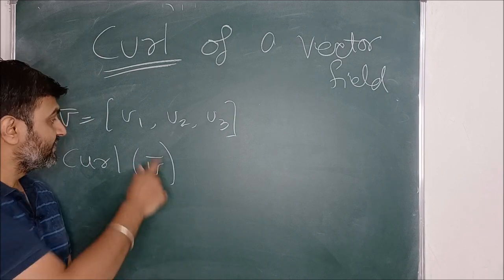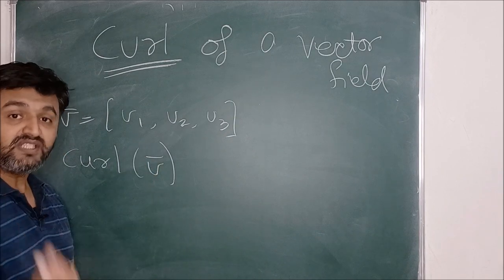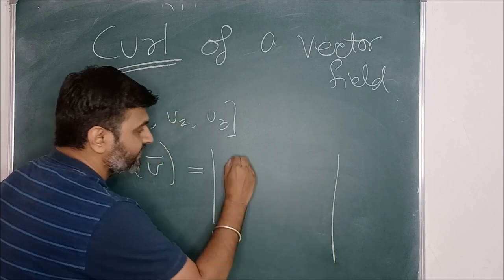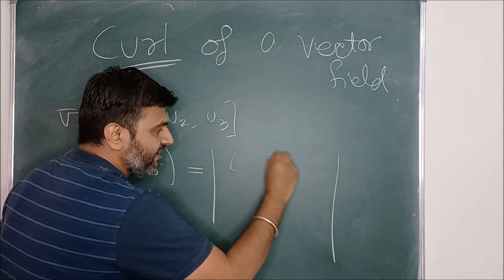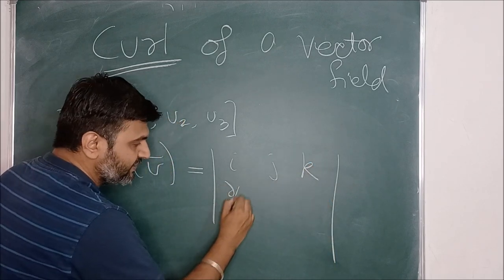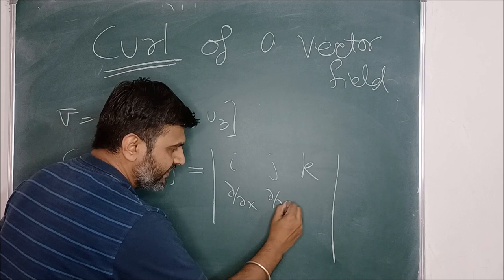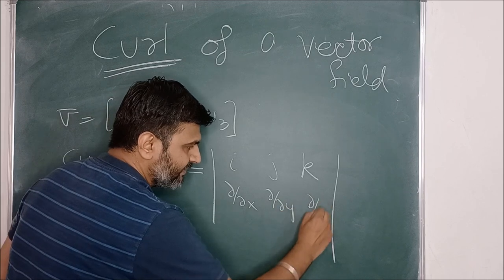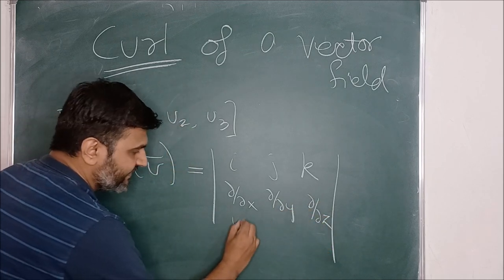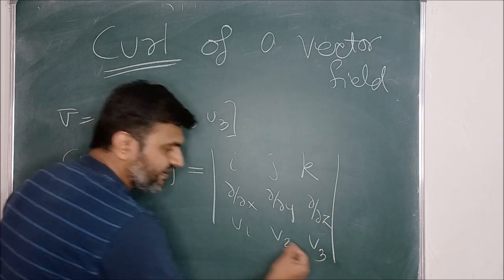So this is the input vector. The output vector is nothing but the determinant with rows i, j, k; the partial derivatives ∂/∂x, ∂/∂y, ∂/∂z; and then V1, V2, V3.